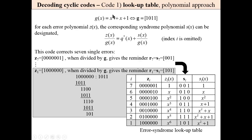For example, for the given generator polynomial, the lookup table contains seven single errors and for each single error a corresponding remainder syndrome is calculated. For the error pattern with a one at the left and all zeros, we divide this error pattern by the generator polynomial and the remainder is 1,0,1. This is the syndrome 1,0,1. That way the lookup table of error patterns and their corresponding syndromes is constructed.